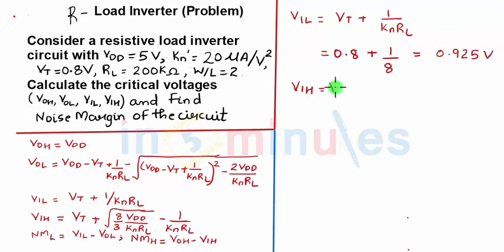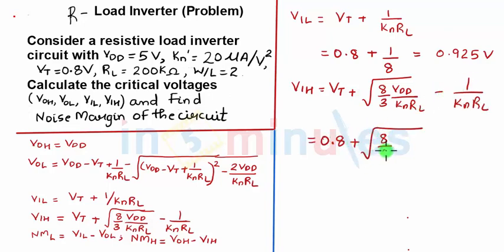VIH. Again the equation is present. Just rewriting it. Substituting VT is 0.8, 8 by 3 into 5 divided by 8 minus 1 by 8 which is 1.97 V.